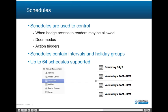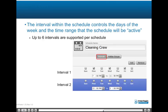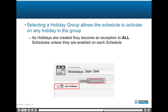Schedules are used to control when badge access to readers may be allowed, door modes, and action triggers. Schedules contain intervals and holiday groups. The system allows up to 64 schedules. The interval within the schedule controls the days of the week and the time range that the schedule will be active, with up to 6 intervals supported per schedule. Selecting a holiday group as part of the schedule allows the schedule to activate on any holiday defined in the group. Note that as holidays are created they become an exception to all schedules unless they are enabled on each schedule.